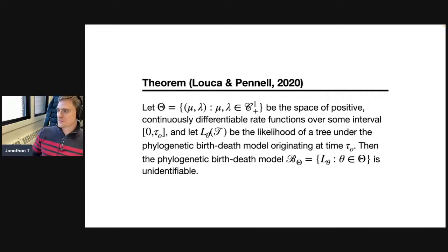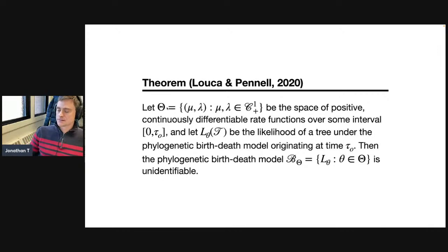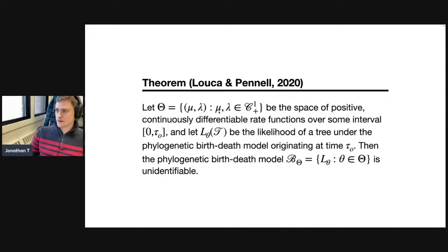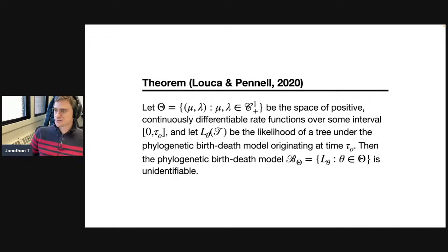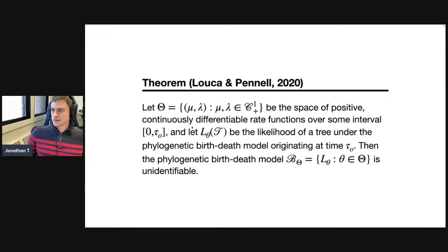The theorem of Louca and Pennell, paraphrasing: if the only assumption I make about my phylodynamic model is that lambda and mu are continuously differentiable functions — just positive functions with a little bit of smoothness — then this model is unidentifiable. Meaning, given any lambda and mu that might have generated the data, I can cook up a different alternative set of lambda and mu that would have the exact same distribution.